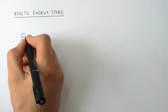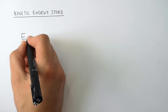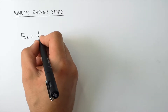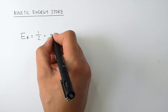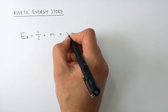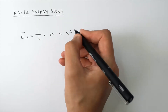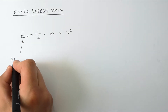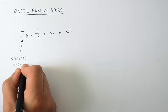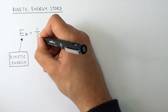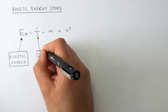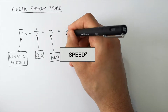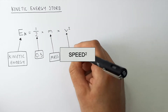The formula for the kinetic energy stored in an object is E, kinetic energy, equals half times m mass times speed squared, v squared. E stands for the energy stored in the kinetic energy store of the object. Half is literally just the number 0.5. m is mass and v squared is speed squared.